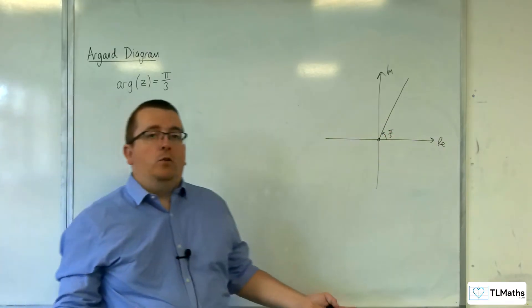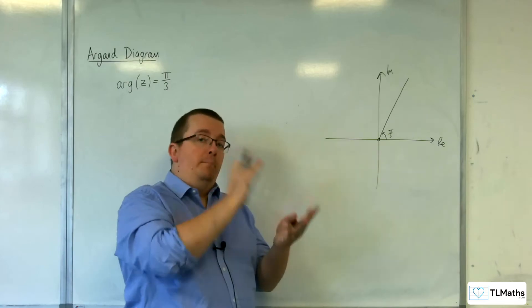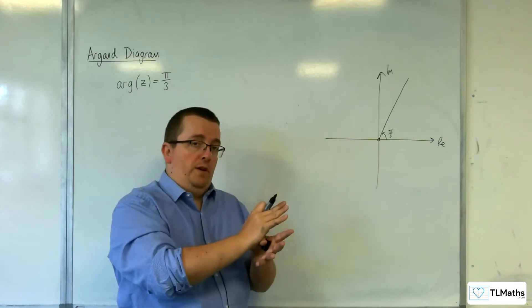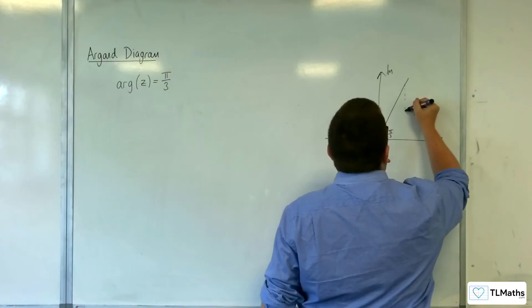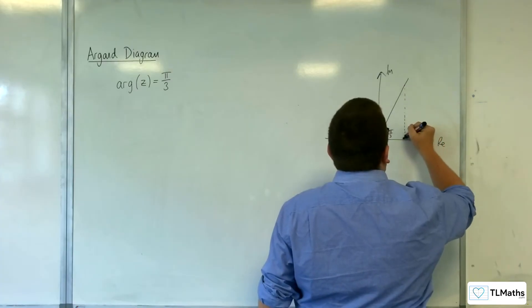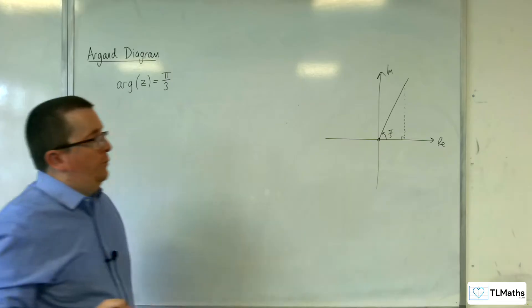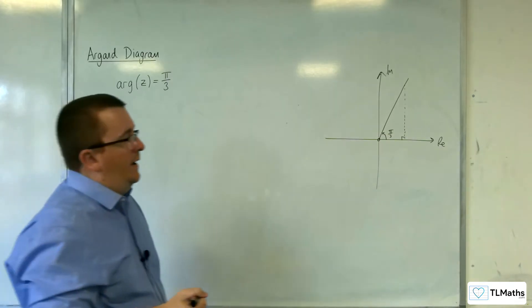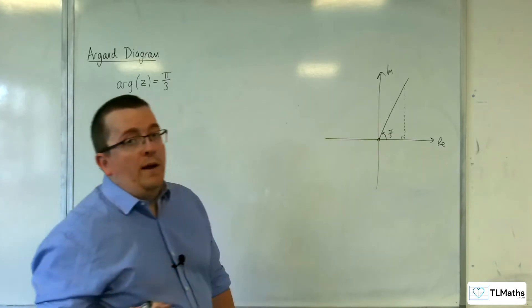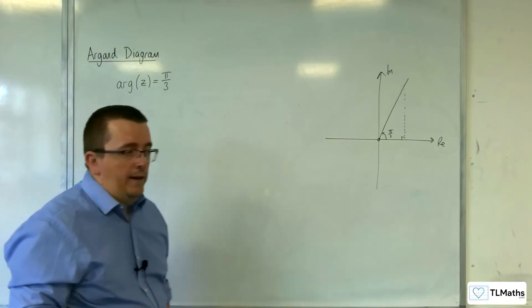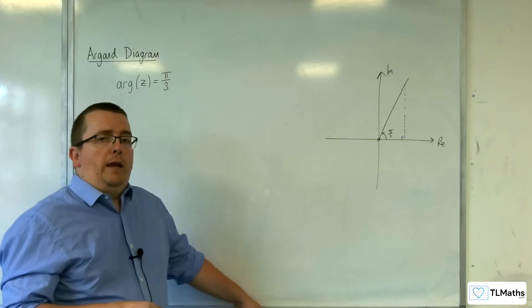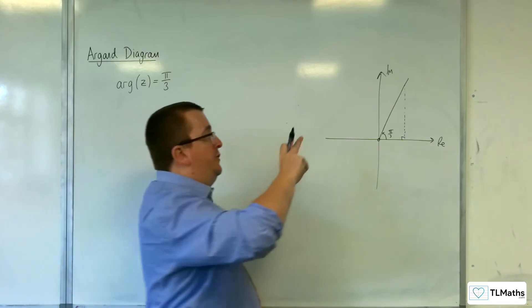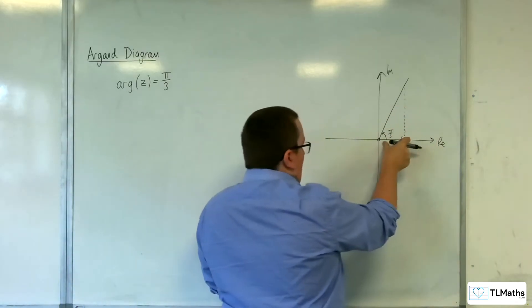We know the angle that it makes with the horizontal being π/3. If I just drop a perpendicular down there to the real axis, then think about basic trig and your basic knowledge of gradients. You know that the gradient of a line is the difference in y divided by the difference in x.